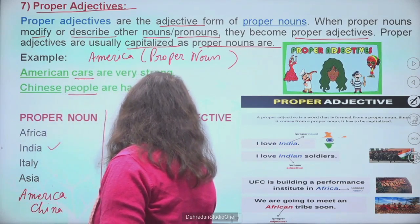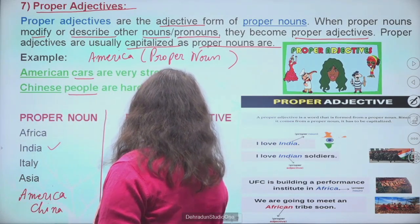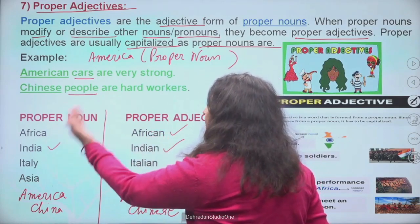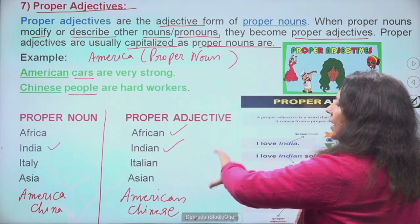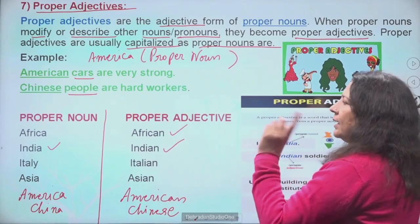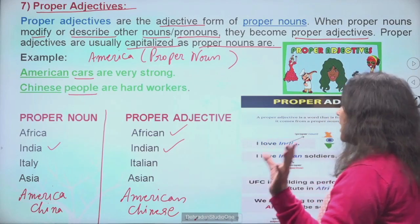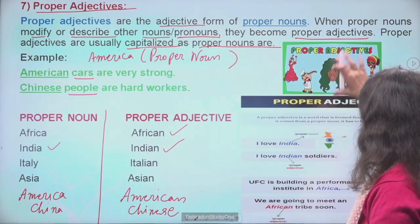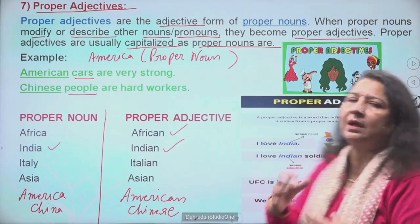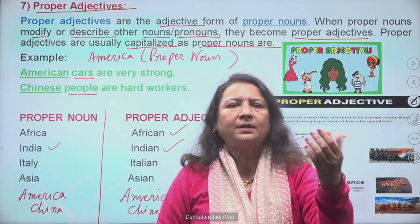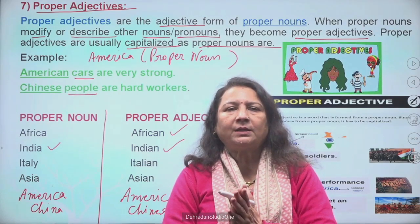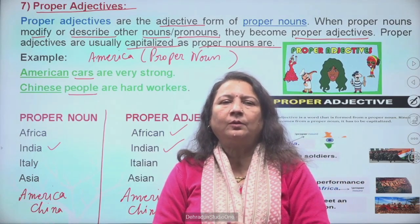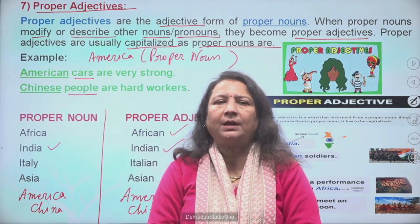Aap apni book mein dekh sakte hain. Difference yeh hai: America proper noun hai, American proper adjective. Agar American hoga toh proper adjective hai; agar America bolenge toh proper noun. Jitne bhi types padhe hain adjective ke, saare bachche ghar jaake revise karein. Kal isko aur detail mein padhenge — proper adjective kya hote hain, kaise sentence mein use karte hain. Revise the topic at home. Tomorrow we will continue the same. Bye, take care.